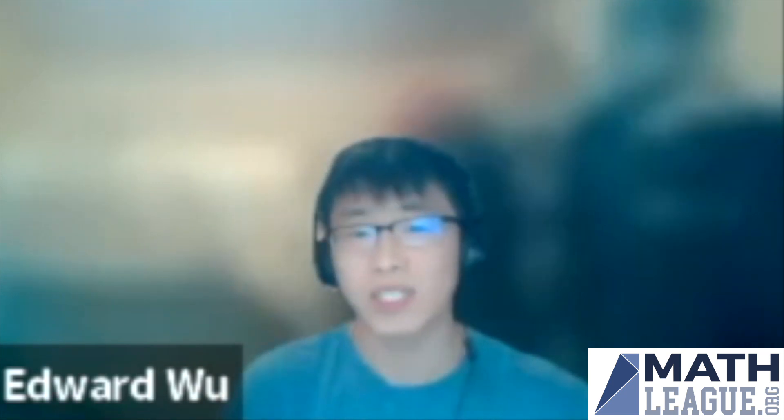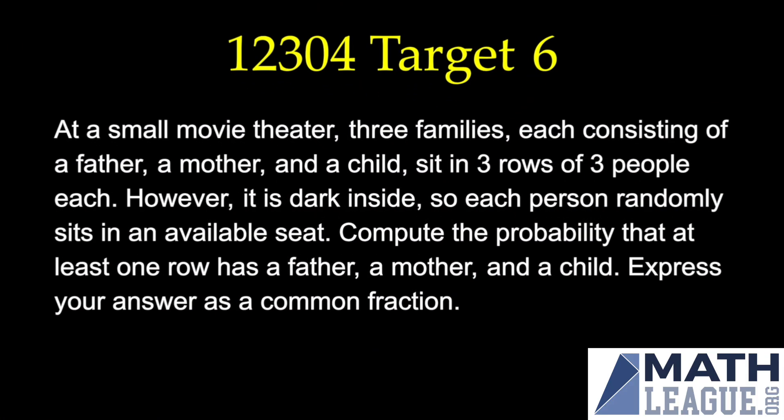My name is Edward and right now I'll be going over 12304 Target 6. The question says at a small movie theater, three families each consisting of a father, a mother, and a child sit in three rows of three people each.